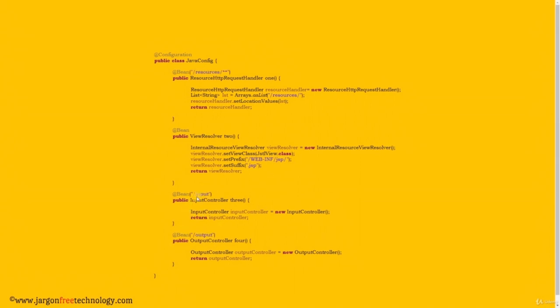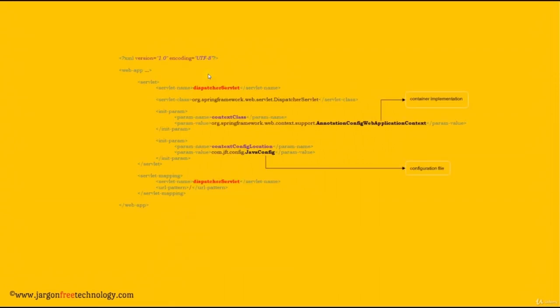Next, we need to configure the server container by making some changes in web.xml — set the appropriate values for the context class param and context config location. Now this is the container implementation that will be used: AnnotationConfigWebApplicationContext. So earlier we were using XMLWebApplicationContext; now it is AnnotationConfigWebApplicationContext. And instead of an XML file, now we are using a Java class as the configuration file. One more thing — the name of the bean method will be the ID of the bean. If we want to provide a custom value for the ID, we can specify it along with the @Bean annotation.